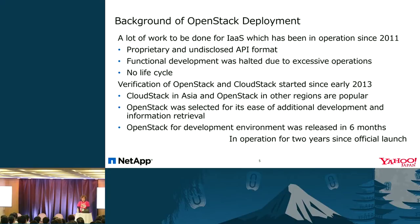First, the API format was proprietary, making it quite difficult to develop and operate the IaaS environment with a limited amount of resources. We had to allocate a lot of human resources to operation, which slowed down new functionality development. Devices were aging and there were advanced functions in newer devices, but adopting them required creating entirely new environments, making lifecycle management difficult. Therefore, in the beginning of 2013, we started paying attention to OpenStack and CloudStack, and began validation.